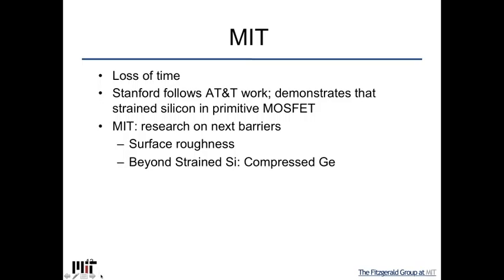There were a few barriers. I mentioned the surface roughness. And now that we could do all this stuff, it became clear that compressed germanium — much like strained silicon is tensile strained, strained germanium would be compressed — would advance hole carriers. Electrons moved in tensile silicon very fast, but electrons and holes could move very fast in compressed germanium. It turns out that compression and tension were the main things, and so we started to investigate that in research as well.